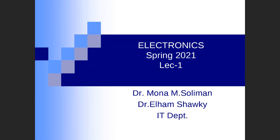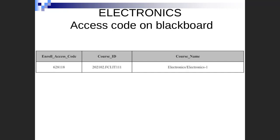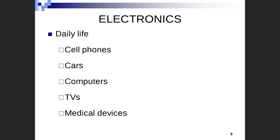We will start now to explain the electronics course in English. We will begin with lecture one. This is the enroll access code of the electronics course on the blackboard. Why do we study electronics? We study this course because we are surrounded by different electronic devices such as cell phones, cars, computers, TVs, and medical devices.